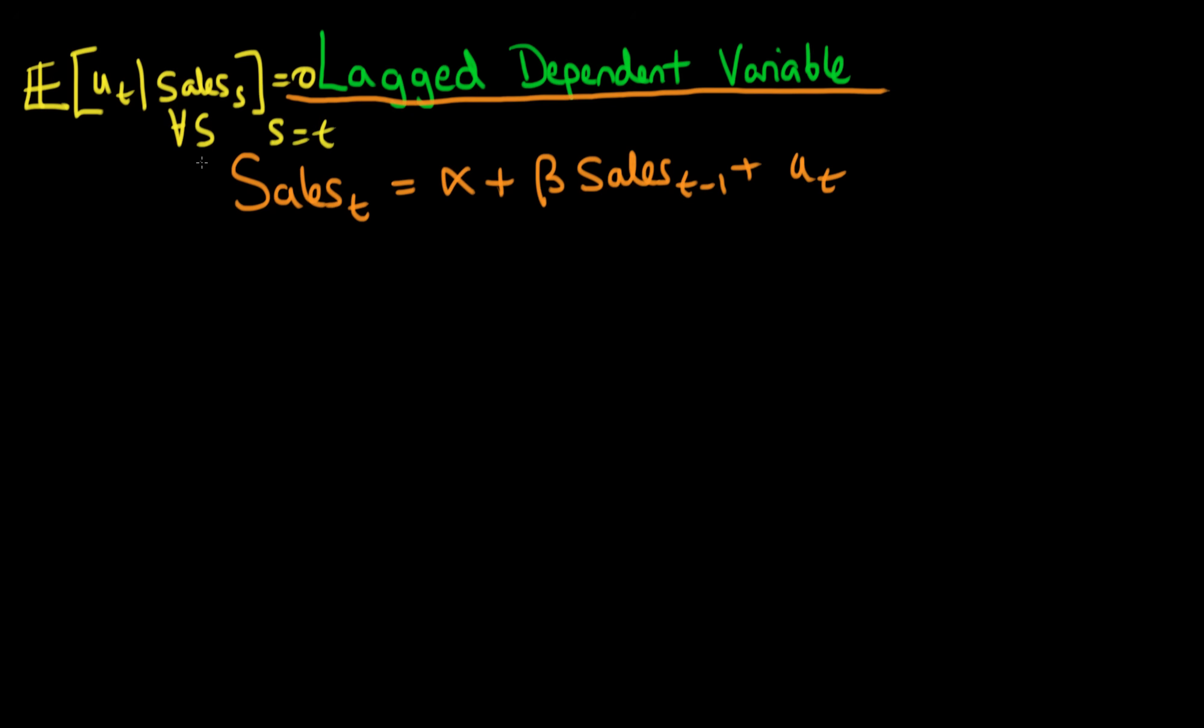So why doesn't this necessarily hold for the case of having a lagged dependent variable in our model? We can see quite easily that the covariance of ut with sales in some period, let's say t minus 1 or t minus 2, or in general t minus tau, has to equal 0. So there's no problem there.